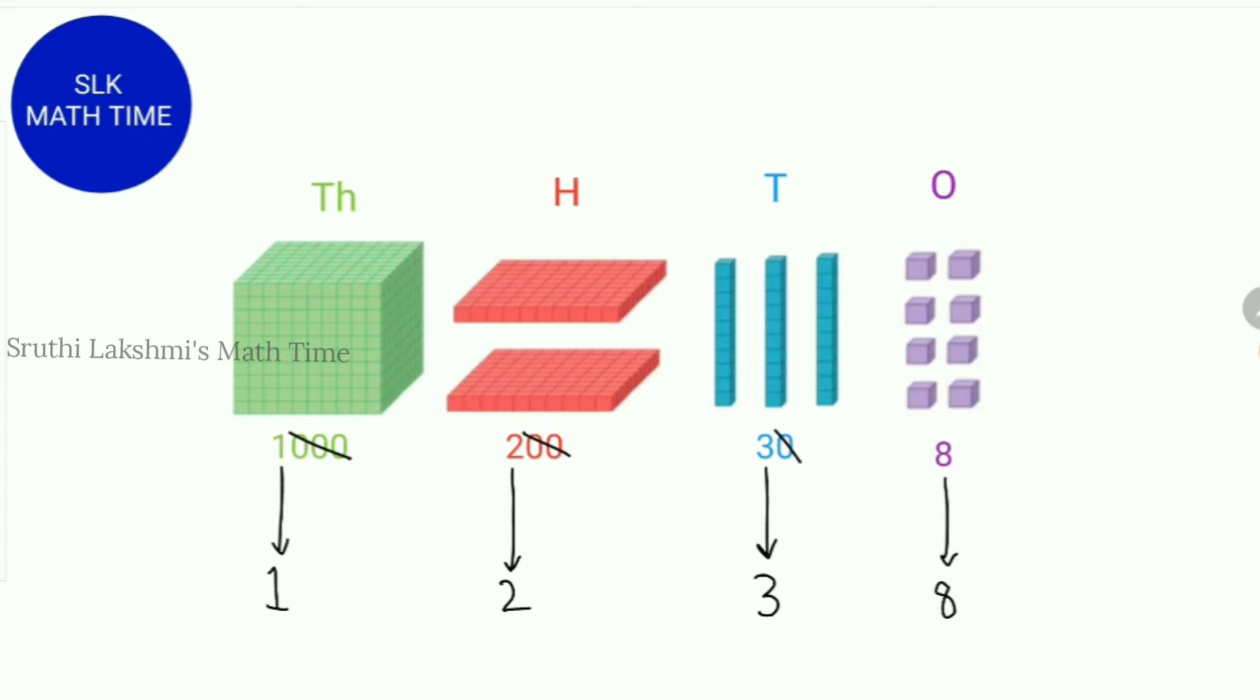So how do we pronounce this? How many thousands are here? 1. So we say 1,000. How many hundreds are there? 2. So 1,200. There are 3 tens, so 1,230. There are 8 ones, so 1,238.